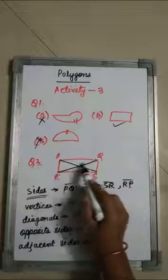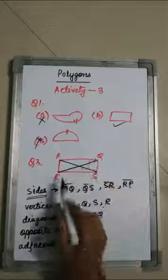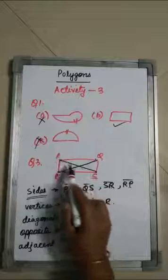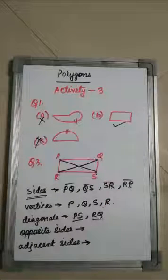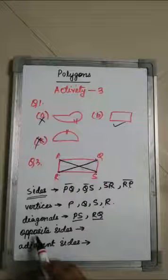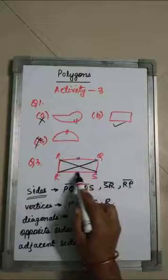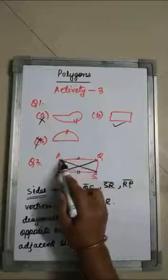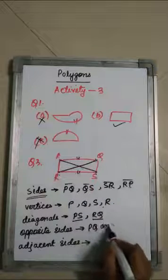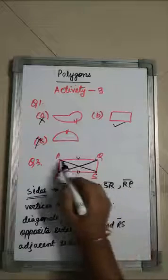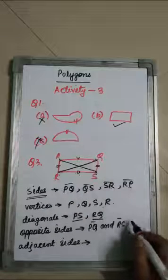Now, opposite sides: PQ is the opposite side of RS, and PR is opposite to QS. So the pairs of opposite sides are PQ & RS, and PR & QS.